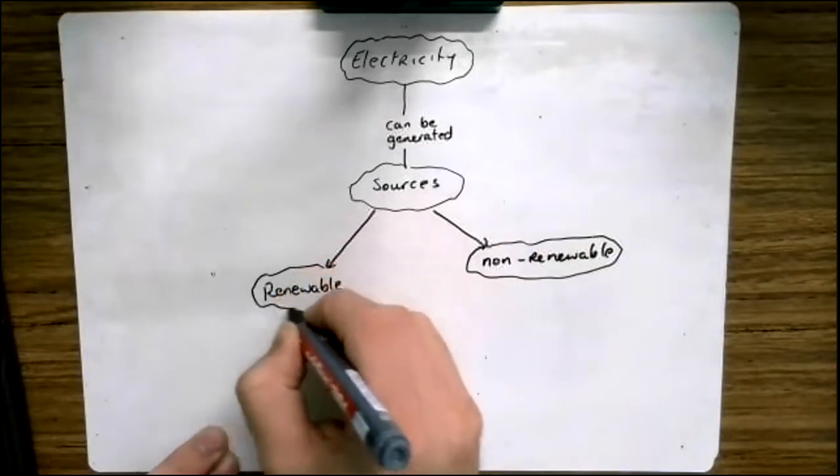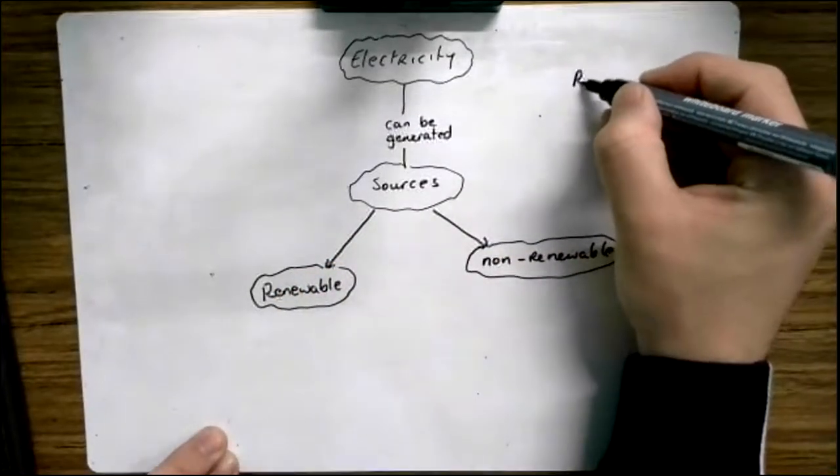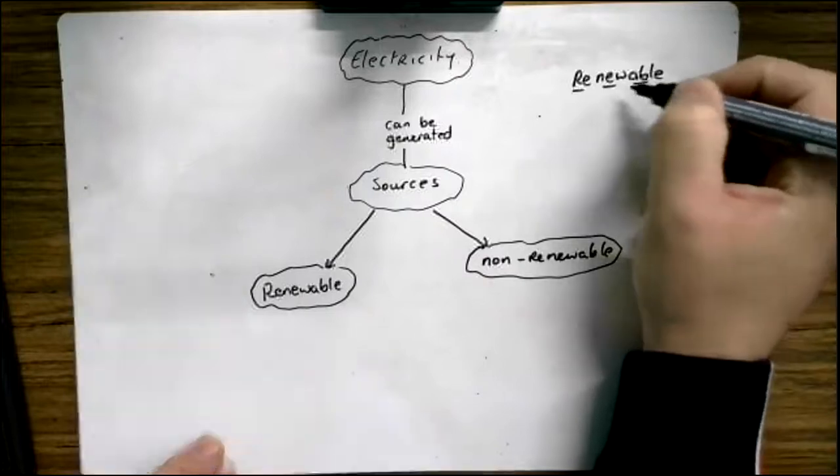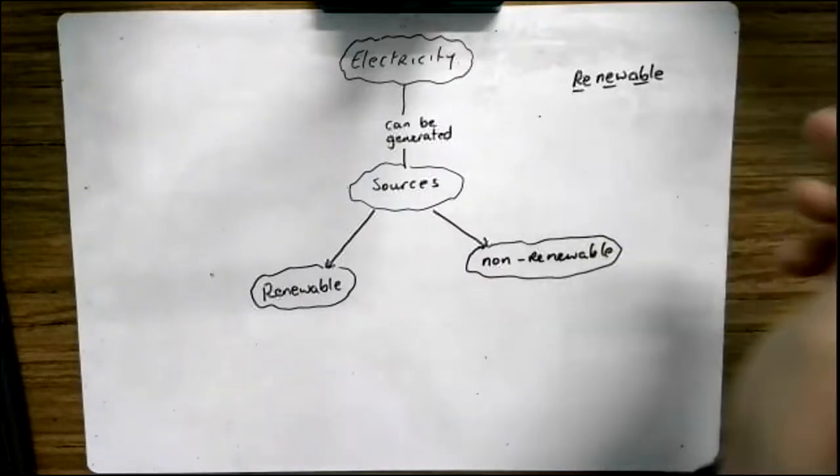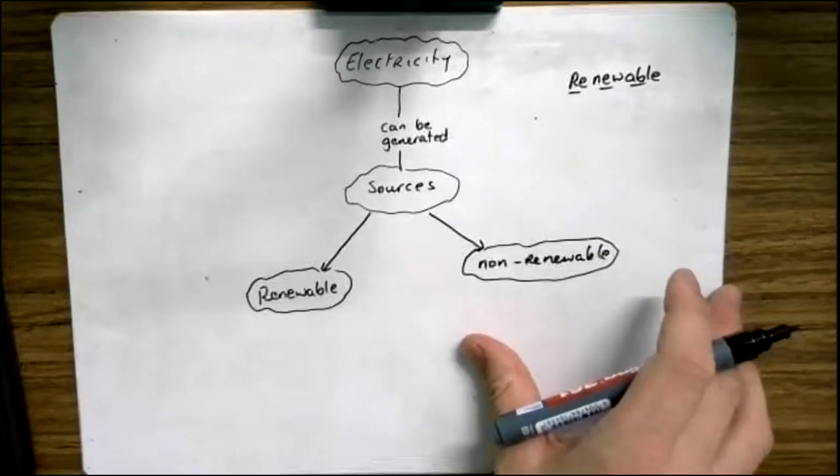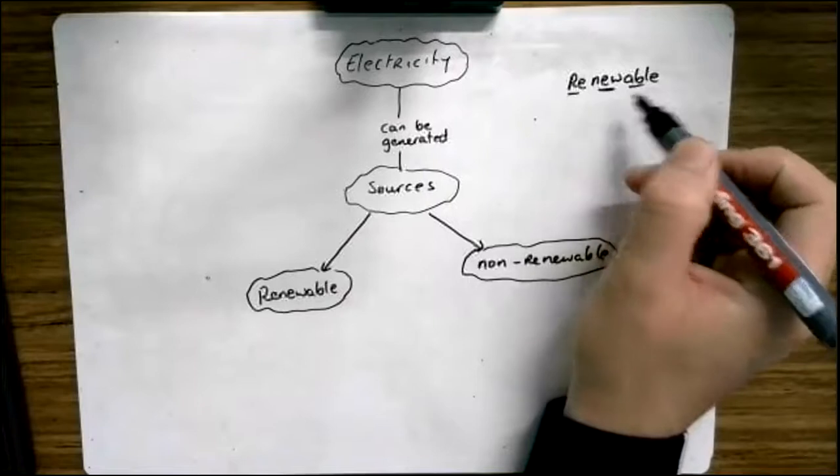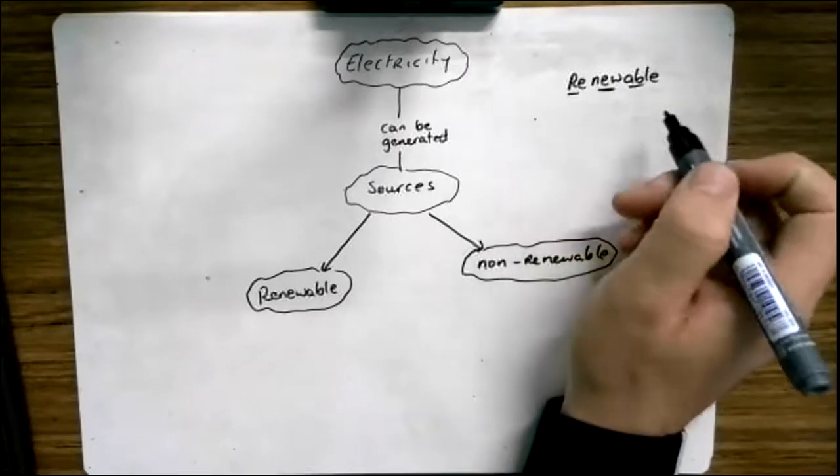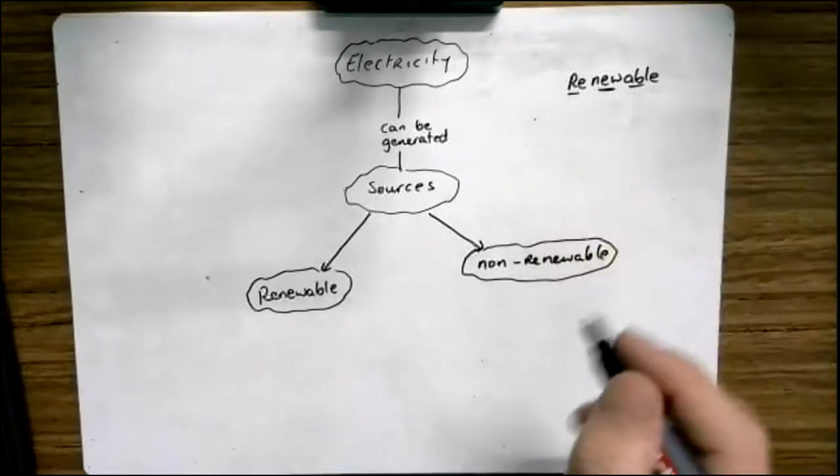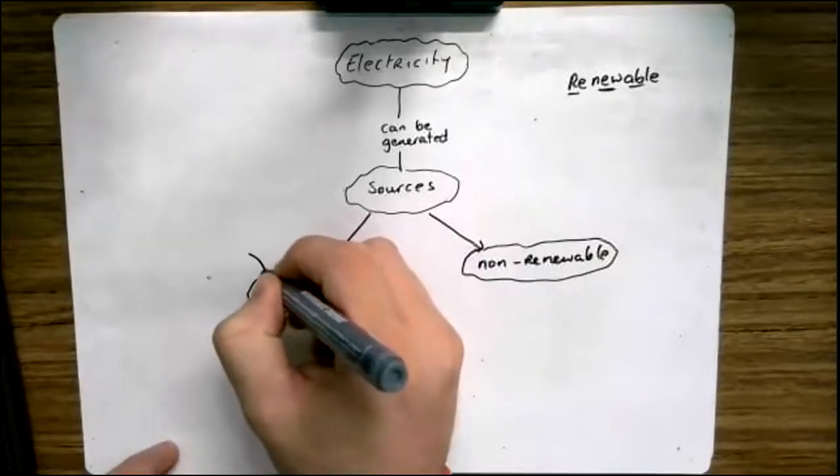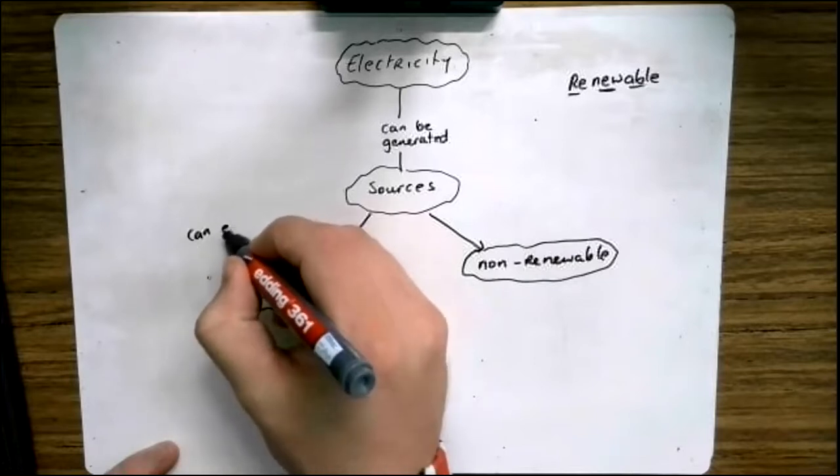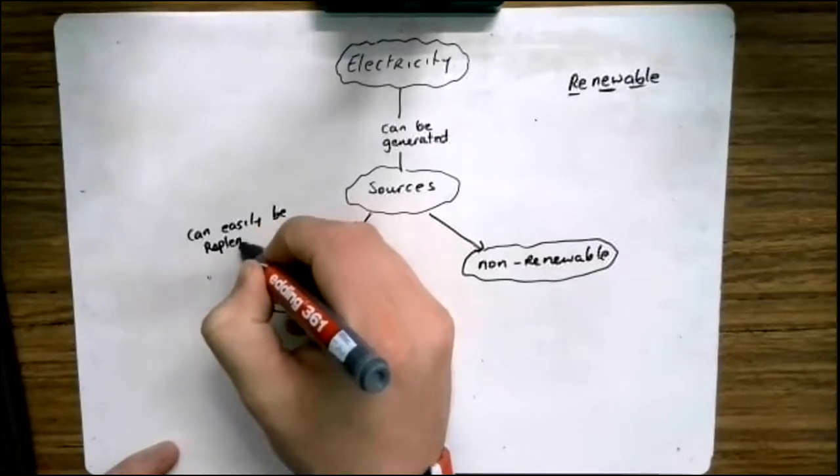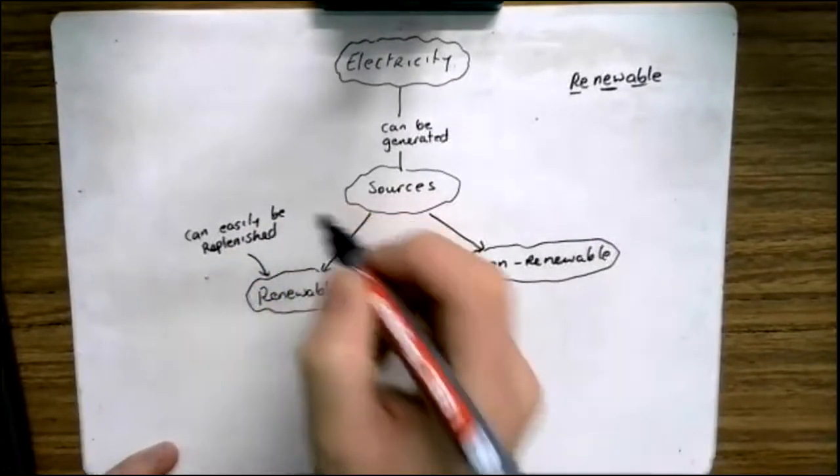Now if we zoom in on this word renewable, re-new-able, it's made up of three words. We all know what it means to make a new version of something. It basically means to start again with a new substance or a new object. Able means you can do it and re means to remake. So can you remake new ones? Are you able to remake new ones? So renewable fuels are ones then that can easily be replenished, and that means restocked or recreated.